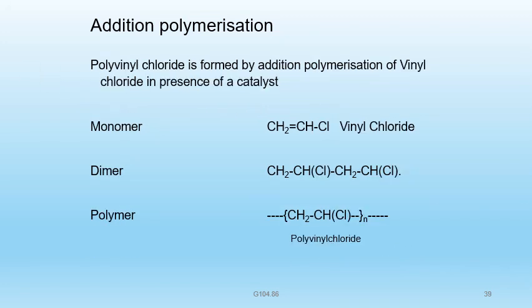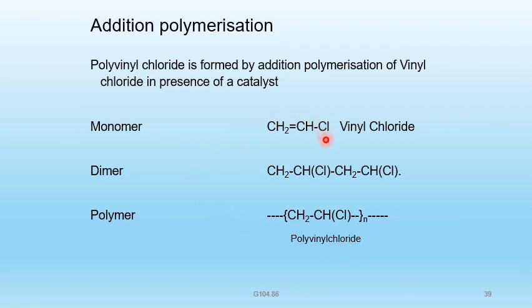Another example of addition polymerization: polyvinyl chloride (PVC) is formed by addition polymerization of vinyl chloride (CH2=CHCl) in the presence of a catalyst. Vinyl chloride monomers combine together to form polyvinyl chloride.